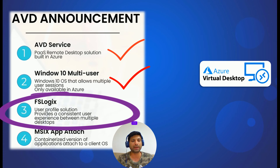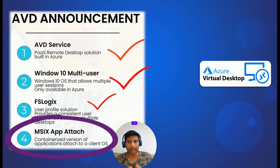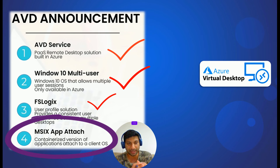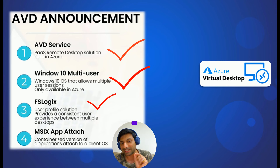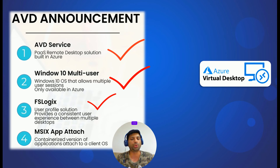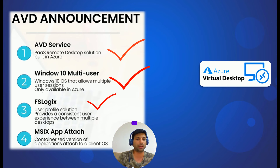The fourth technology is MSIX App Attach. You are probably used to installing applications that need to be installed on a fresh computer before it is ready for the end user. What MSIX App Attach does is attach certain kinds of packaged applications in a way that they are attached to the OS, not installed on the OS. This decreases the time to deploy new services and makes the application portable. We will see that in detail and practically do it in the lab environment in this tutorial series.